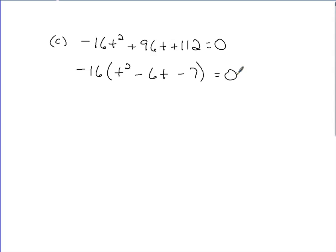At which point it looks like we have something we could factor a little bit further. With that greatest common factor of negative 16 in the front, we could break up the resulting quadratic of t squared minus 6t minus 7. If we break that up, we get t minus 7 and t plus 1.